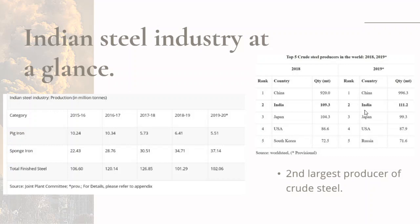First of all, let's take an overview of the Indian steel industry. India is currently the second largest producer of crude steel and produced 111 million tons of crude steel last year. There was a decline of 14.1% in the production of pig iron, which was about 5.51 million tons, but India was the largest producer of sponge iron in 2019.